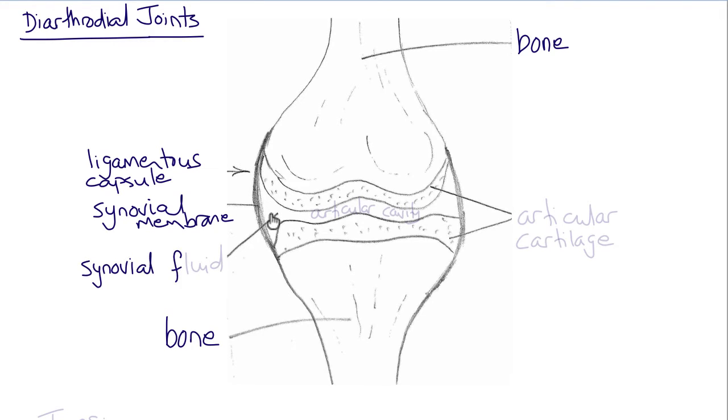Inside the joint is synovial fluid, and at the ends of the bone is the articular cartilage that is also saturated with synovial fluid and forms the bearing surface for joints.